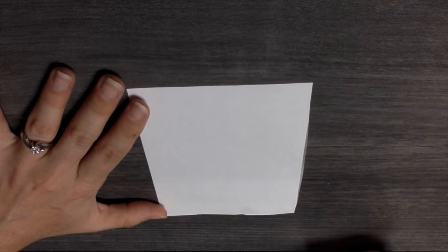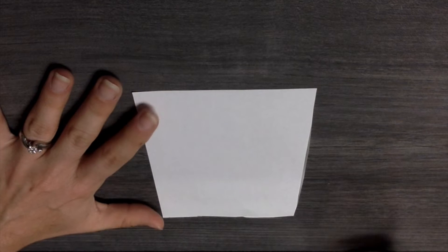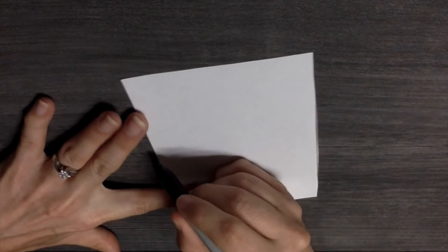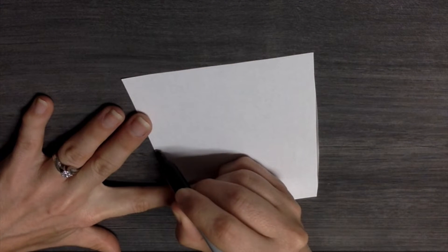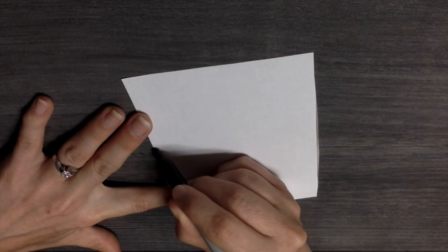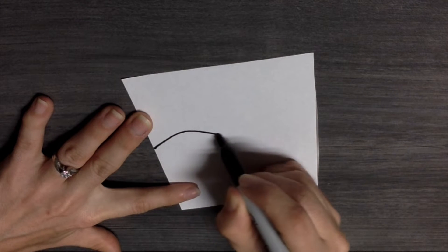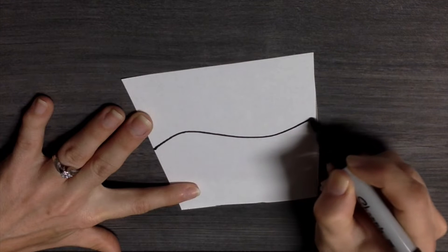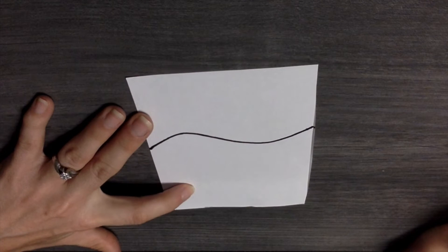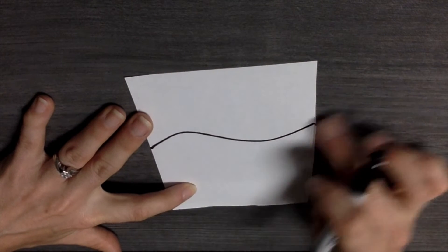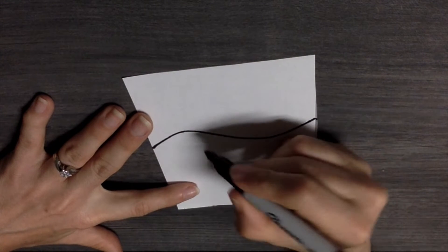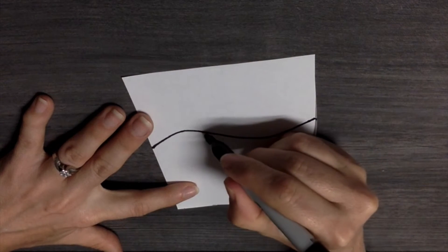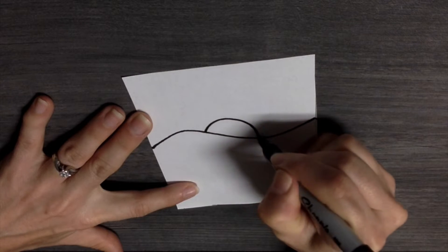Now we are going to make an ocean. Starting in the middle, we are going to do an ocean wave. Going up, down, and up to the other side. Nice wave. Then we are going to do our sun. Go up the hill and down. Add our rays.